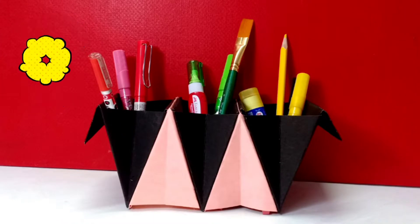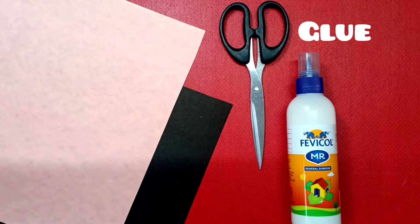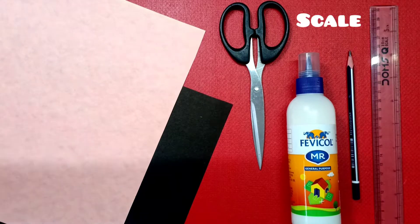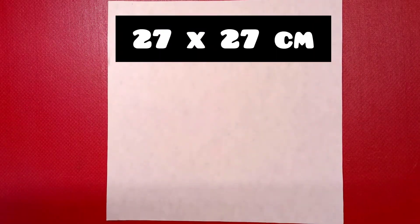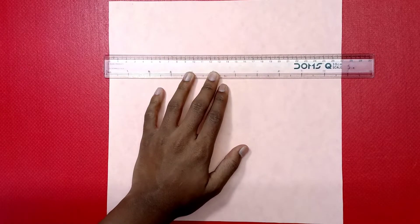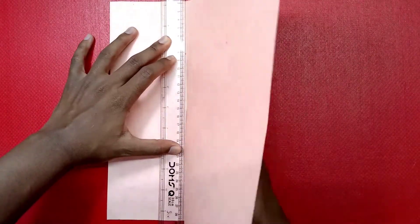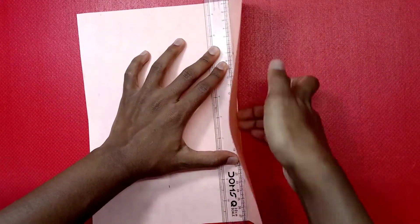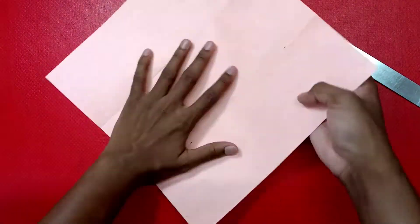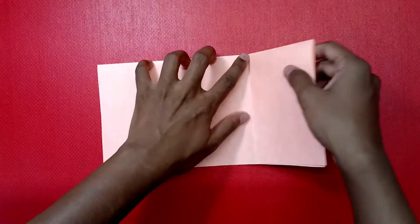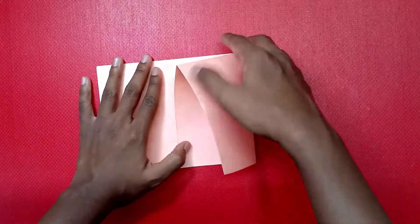For the third DIY, you will need... Here I have taken a 27 x 27 cm of chart. You can also use origami papers. Divide the chart into 3 equal parts each at 9 cm. Fold along the lines. Then fold them into half. Now fold one of the ends like this and then open it and press it down matching the line at the bottom.